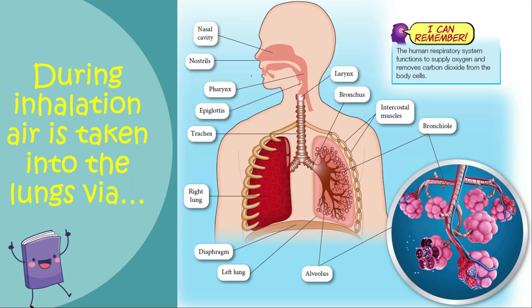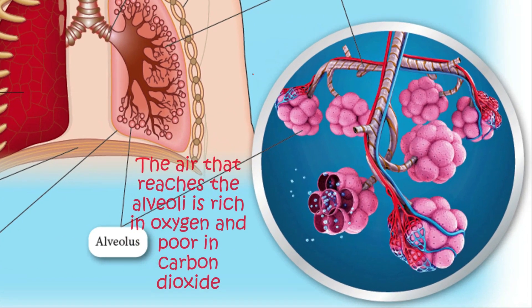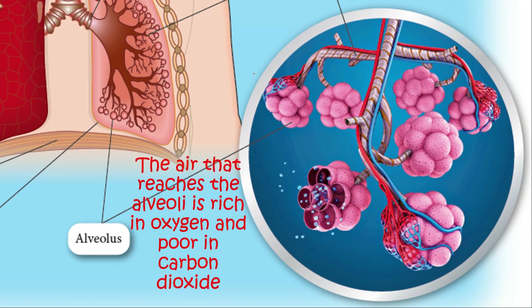During inhalation, air is taken into the lungs through the nasal cavity, passing through the trachea, bronchi, bronchioles, and finally alveoli. The air that reaches the alveoli is rich in oxygen and poor in carbon dioxide.